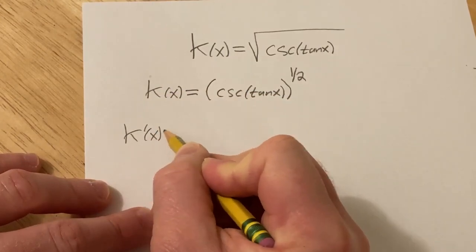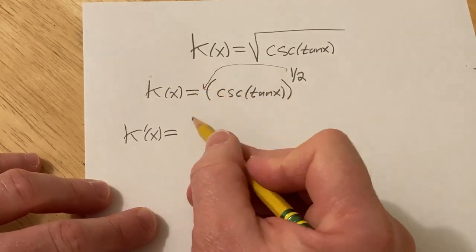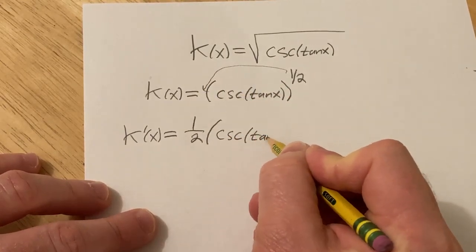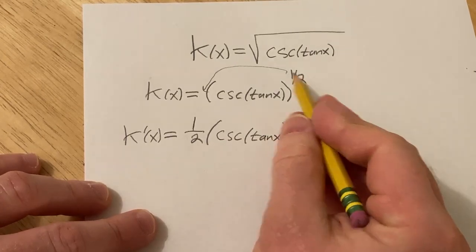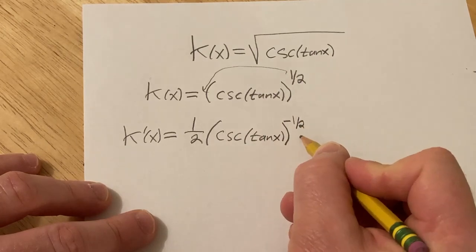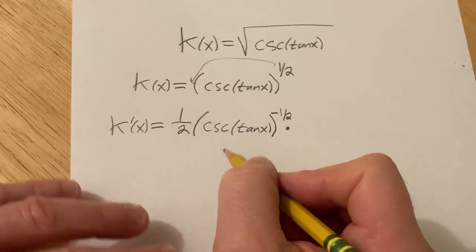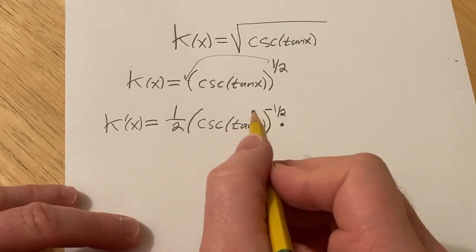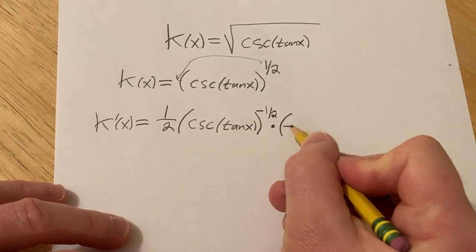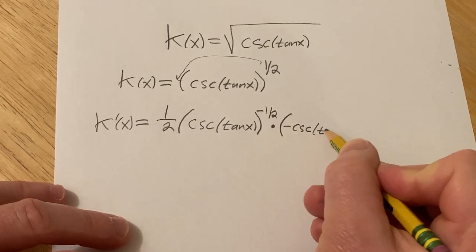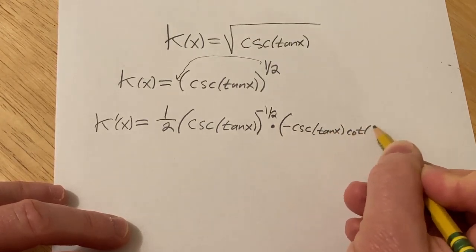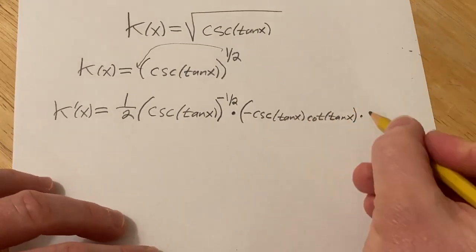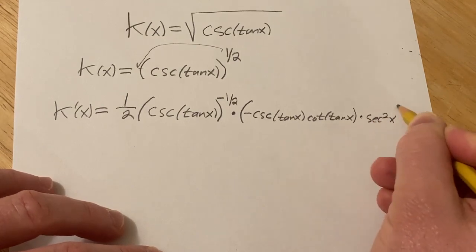So k prime of x is equal to — you take the one-half and put it in the front, so it's one-half times cosecant of the tangent of x, to the negative one-half, and then times the derivative of the inside function. The inside function is cosecant of tan x, and that's going to require another chain rule. The derivative of cosecant is negative cosecant cotangent, so this will be negative cosecant of tan x, cotangent of tan x, times the derivative of the inside. The inside function is tangent, and its derivative is secant squared x.